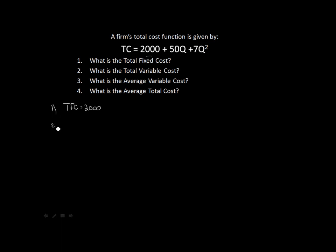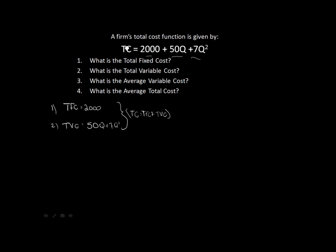Question two: what is our total variable cost, denoted TVC? The variable cost is that part of our total cost function which changes as we change our quantity. Each term where we have a variable is a variable cost, so it would be 50q and 7q squared. Therefore, total variable cost is 50q plus 7q squared. Together, total fixed cost plus total variable cost gives us our total cost — that is the key relationship here.